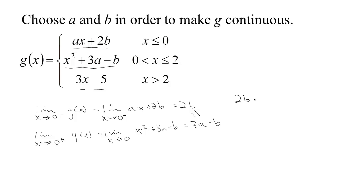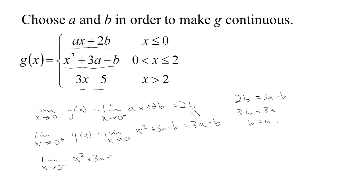To make things match up at 0, we need 2b to equal 3a minus b. Adding b to both sides: 3b equals 3a, so b has to equal a for continuity at 0. Now for continuity at x equals 2, we check the limit from below: the limit of x squared plus 3a minus b as x approaches 2 gives 4 plus 3a minus b.